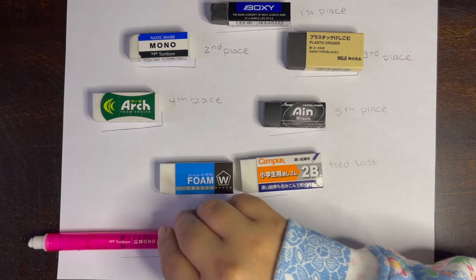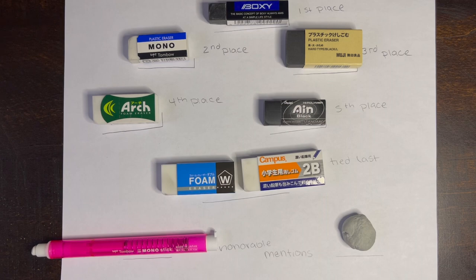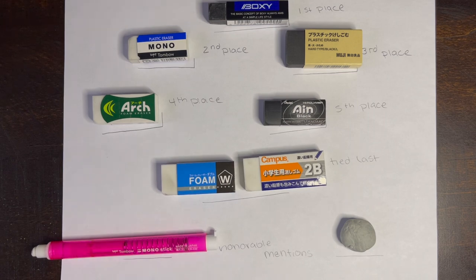And then the honorable mentions are of course my Tombow Mono stick and the Prismacolor kneaded eraser, because the kneaded eraser doesn't count since it mostly picks up lead instead of erasing. And the Tombow Mono stick I kind of forgot, but it's also exactly the same as the block and so it would pretty much be in the same place.